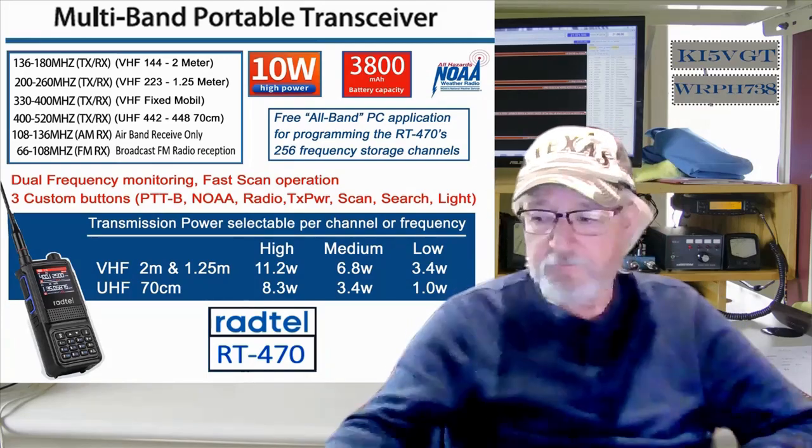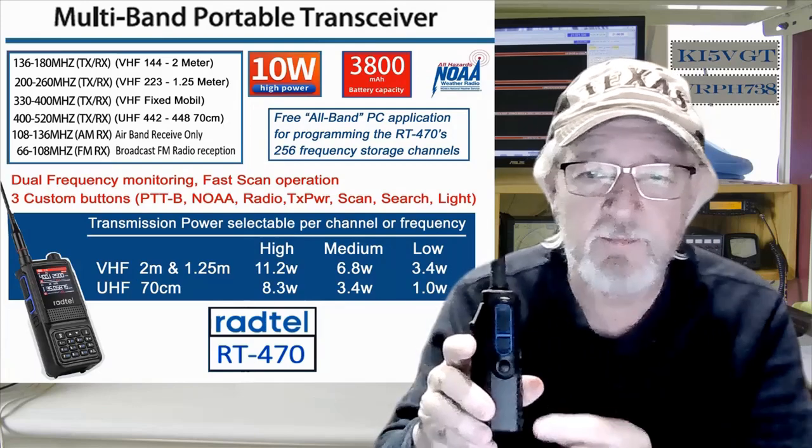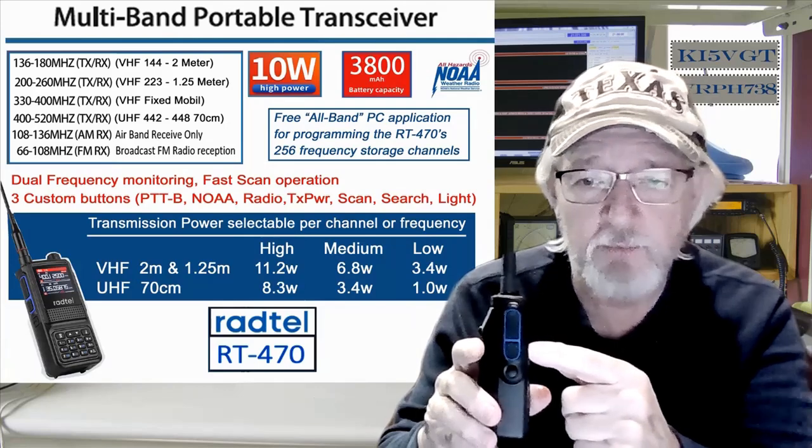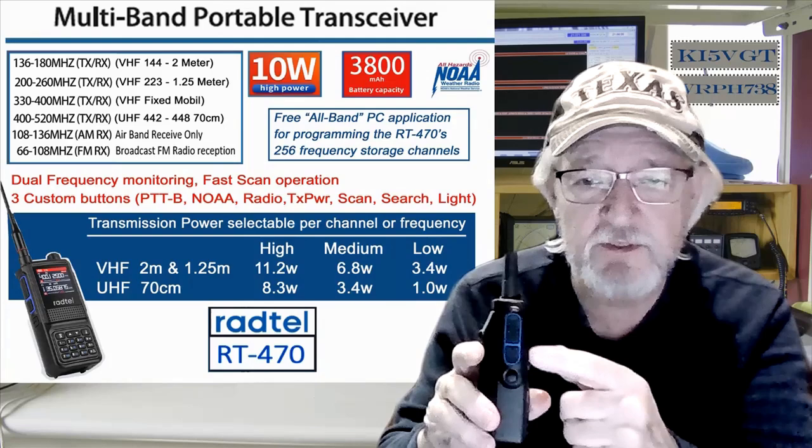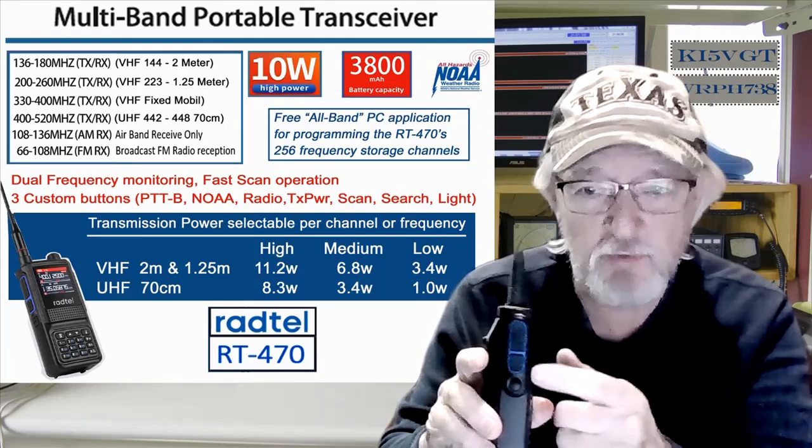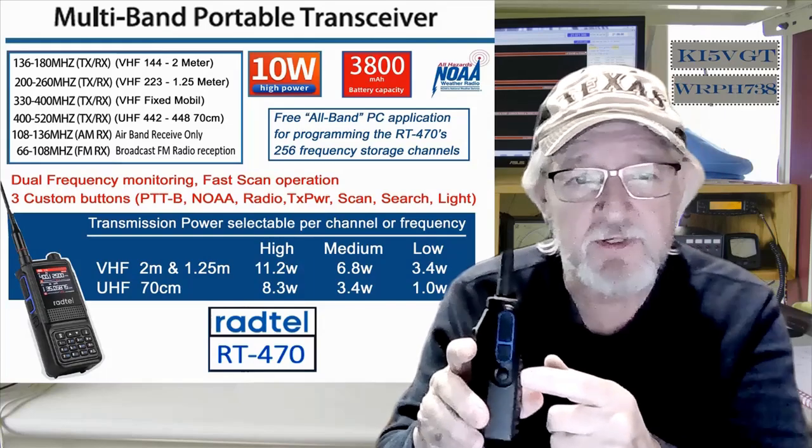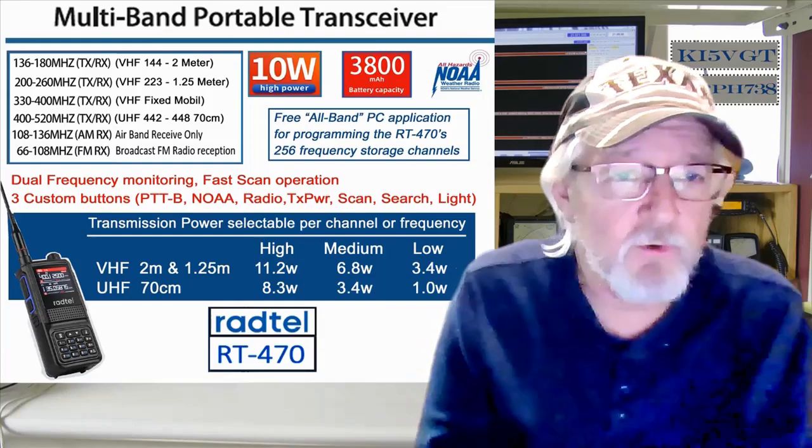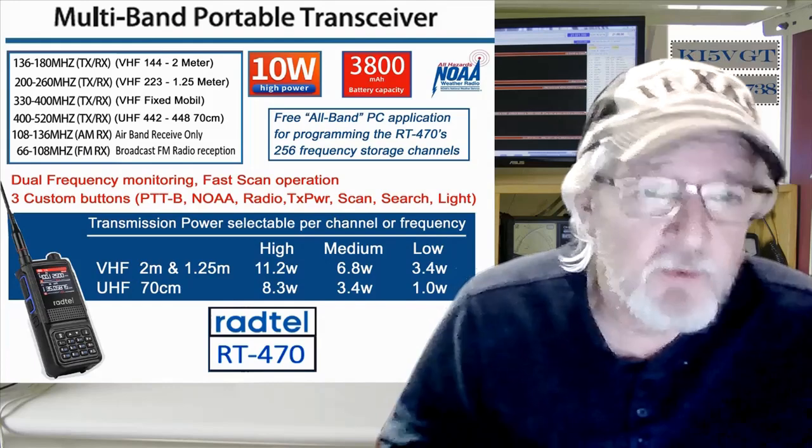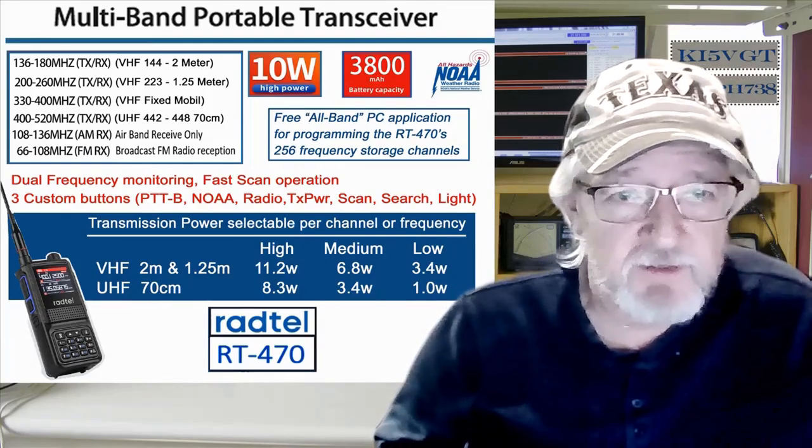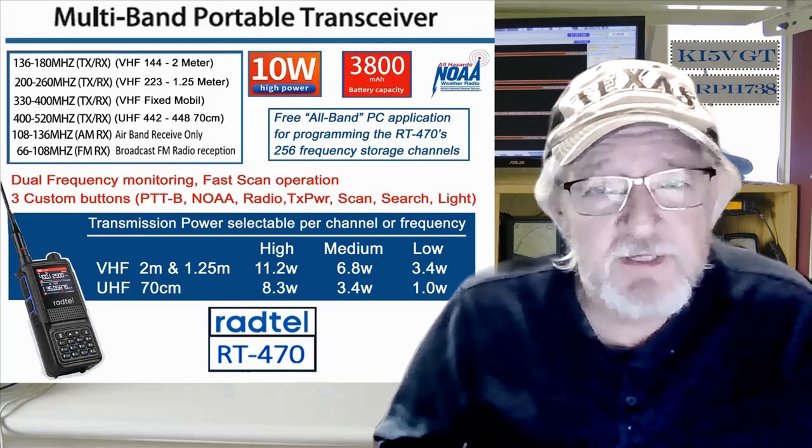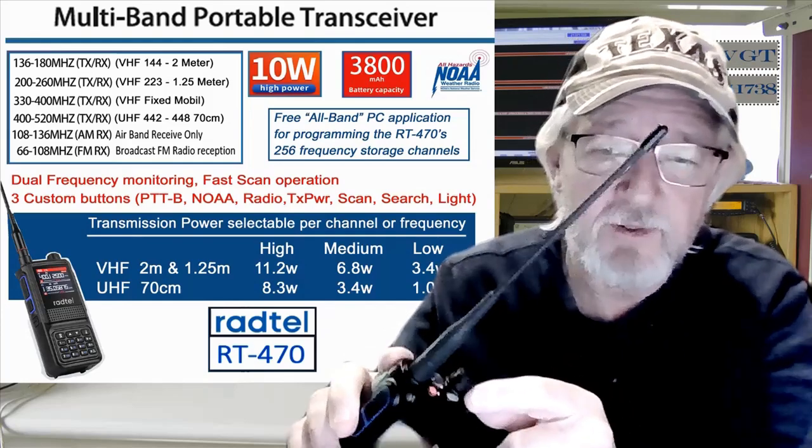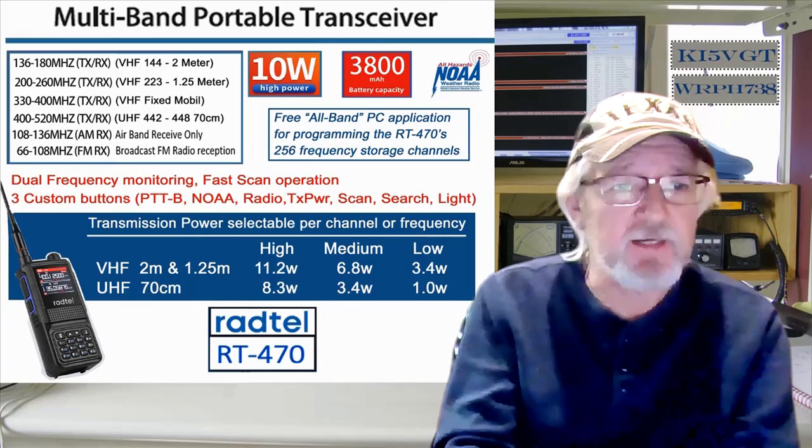This one's not pre-programmed. Three custom buttons - let me just show this. Here, a little small round button. Here, a program button number two. Each of them can be programmed. Basically, short press, long press, same thing here. And they share some of the same options. In the programming software, there's a little drop down. So, you can set it for PTT-B, NOAA, radio (which is the broadcast FM), transmit power, scan, search, or a good old LED flashlight right here at the top.